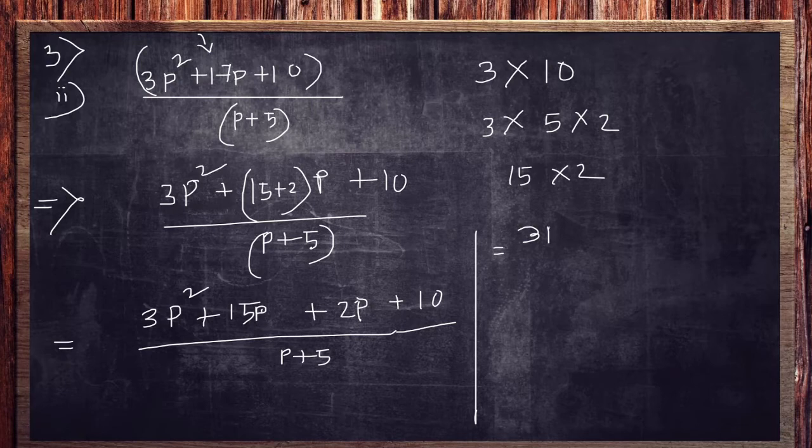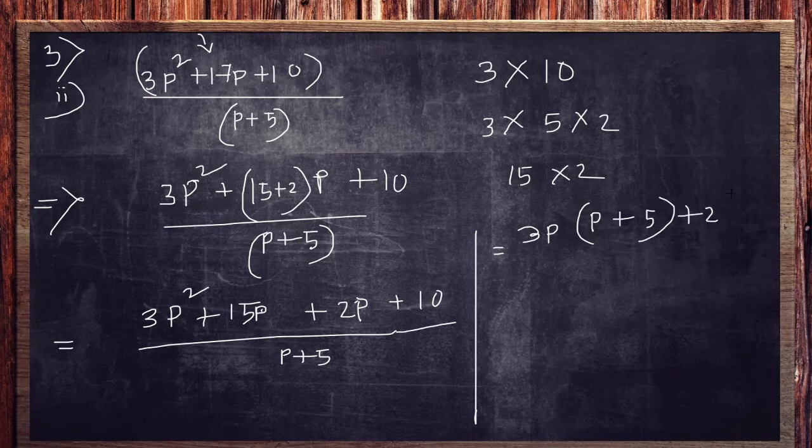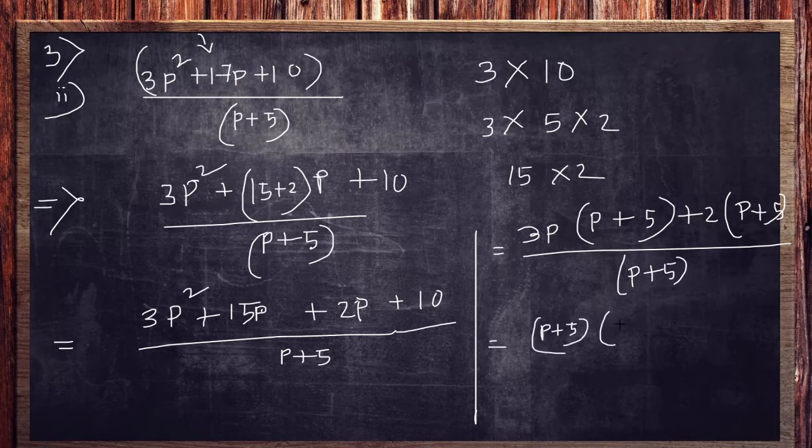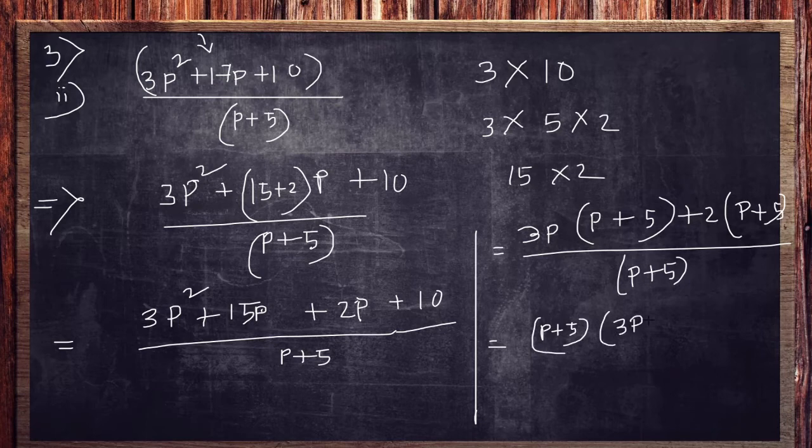So 3p is common from the first one, so we got p plus 5, and also from the second one 2 is common. So p plus 5 is there divided by p plus 5. Final answer is that p plus 5 is in common in the numerator and something is remained which is 3p plus 2.